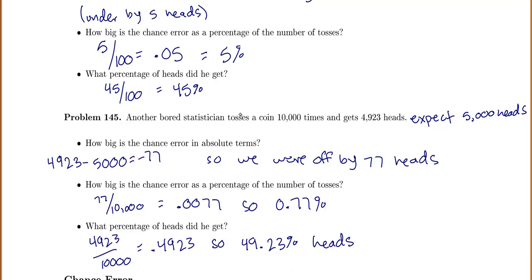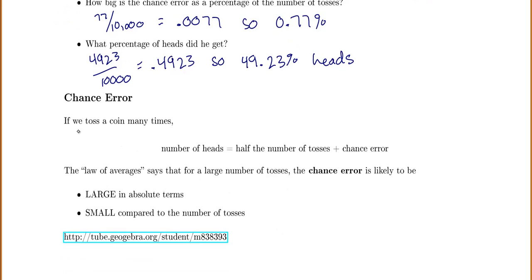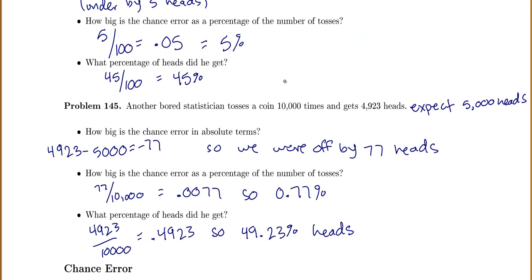Notice which time we got closer to the expected percentage: for 100 tosses we're at 45%, for 10,000 tosses we're at 49.23%. The law of averages says that the number of heads equals half the number of tosses plus some chance error. For a large number of tosses, the chance error is likely to be large in absolute terms but small compared to the number of tosses. When we tossed the coin 10,000 times, our chance error grew to 77 in absolute terms, but as a percentage it got smaller.